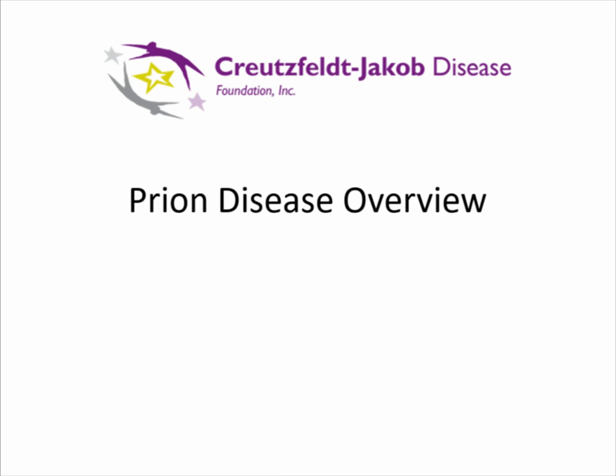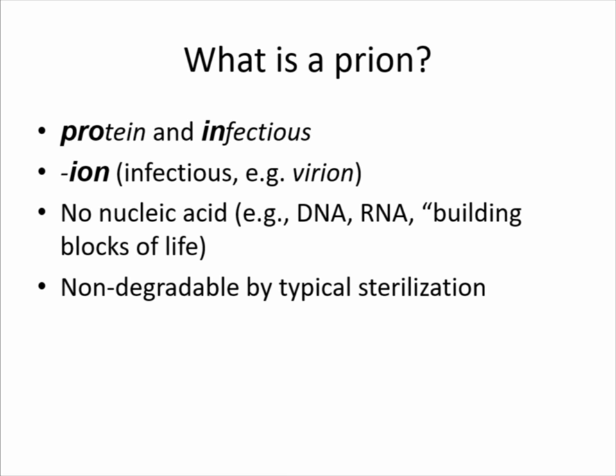A prion stands for a protein that's infectious. Most infectious organisms have DNA or RNA — what we call nucleic acids. Prions are unusual in that they're transmissible, but they don't have any DNA or RNA. So they're kind of a group all into themselves.